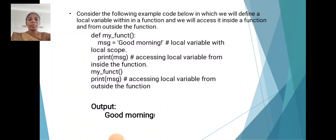Consider the following example: code below in which we will define a local variable within a function and access it inside the function and from outside the function. def my_function(): message = 'Good morning' (that is a local variable with local scope). print(message) - accessing local variable from inside the function. my_function(). print(message) - accessing local variable from outside the function. The output is 'Good morning'.